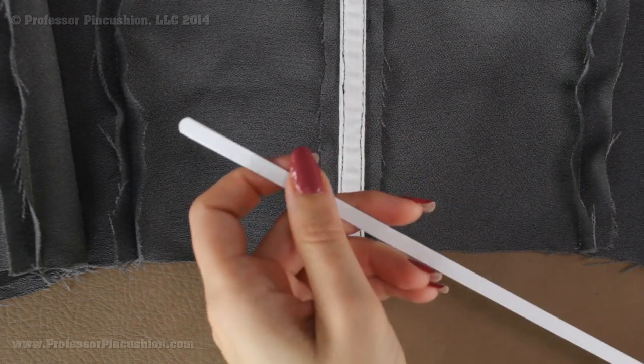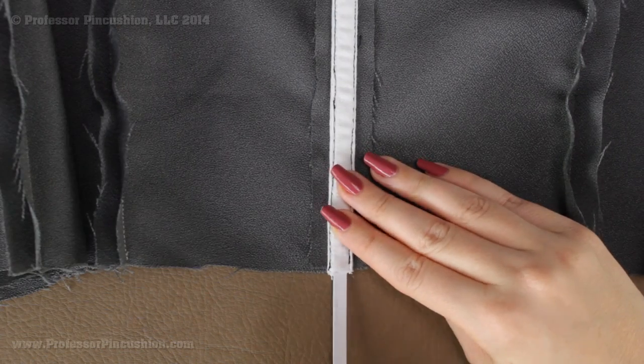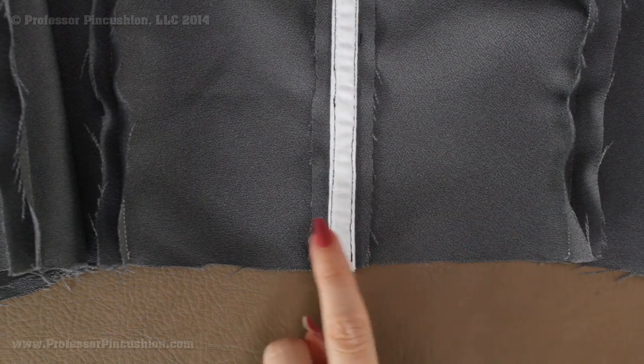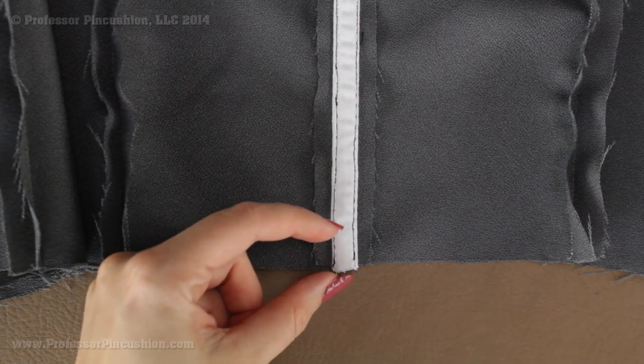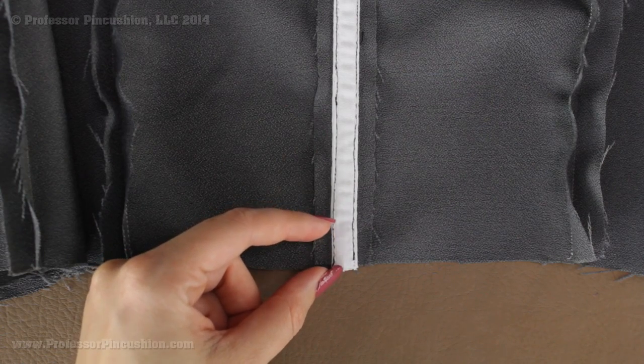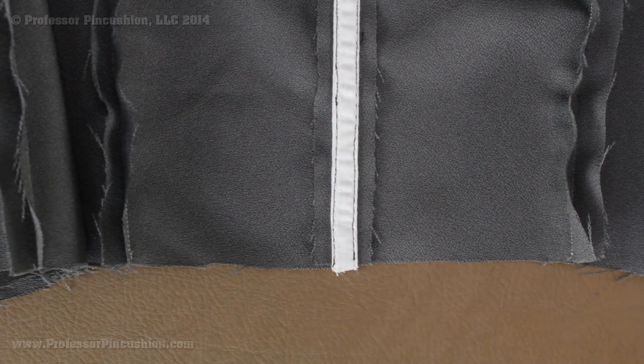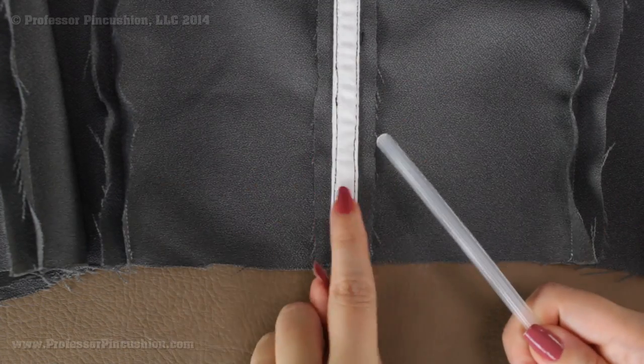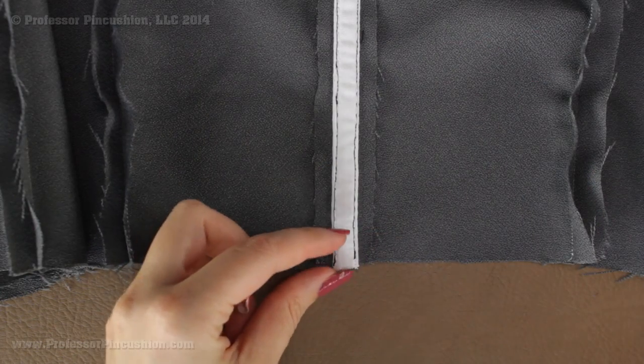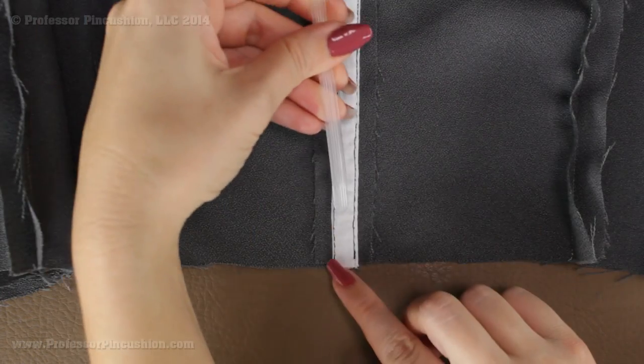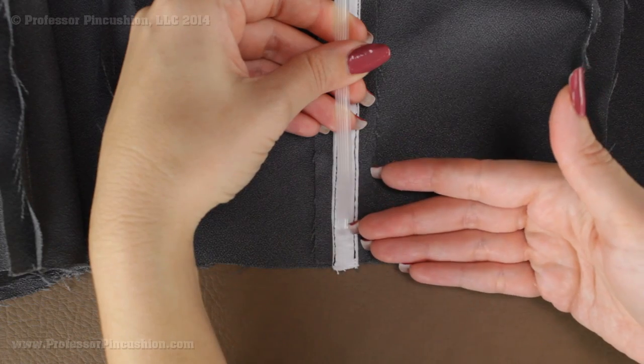If you have precut boning like the steel boning, you can go ahead and put it back in the casing. Now you need to remember we cannot have any boning in the seam allowance area. So if your seam allowance is a half inch, a half inch on both sides of the casing need to be boning free. So you need to take that into account when you order your boning.